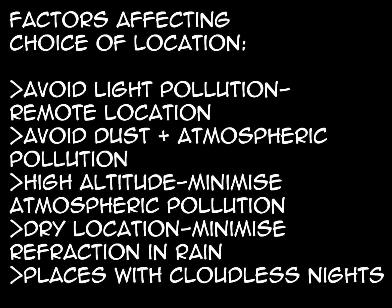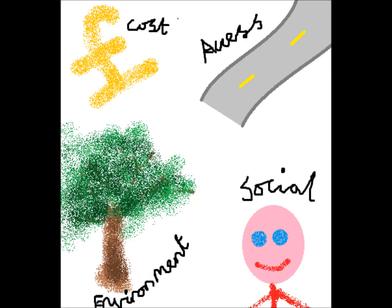Factors affecting choice of location. They need to avoid light pollution, so a remote area is required. They also need to avoid dust and atmospheric pollution, so a high altitude is needed to minimise pollution. It needs a dry location to minimise refraction from raindrops, and they need places with many cloudless nights. Other factors include the cost of building, running, and closing the facility; access, where good roads and maybe airports need to be built; environment, as they need to damage it as little as possible; and social factors, such as water, electricity, and accommodation for the workers.